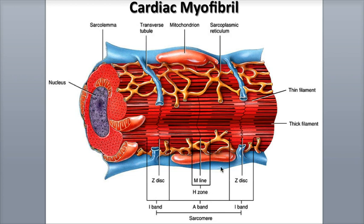The mitochondria found in the cardiac muscle fibers are also larger in size and more abundant than in skeletal muscle fibers, occupying as much as 25% of the sarcoplasm volume.